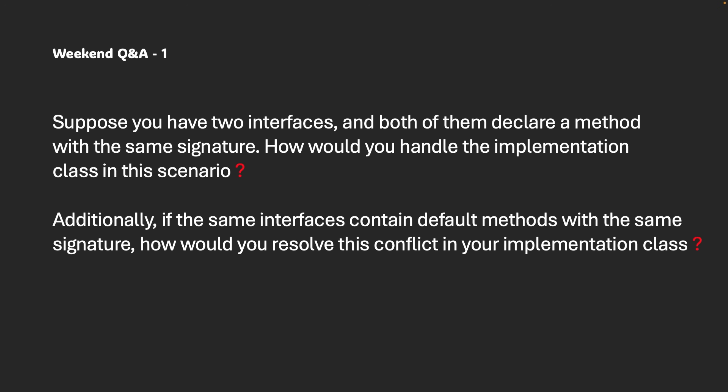Suppose you have two interfaces and both of them declare a method with the same signature. How do you handle the implementation class in this scenario? Additionally, if the same interface contains default methods with the same signature, how do you resolve this conflict in your implementation class? This looks simple, but in reality many people get confused with these two scenarios.